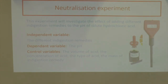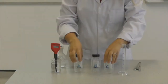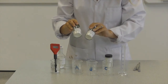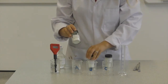Our control variables are everything else we need to keep the same so they don't affect our results: the volume of acid, the concentration of acid, the type of acid, and the mass of indigestion remedy added each time. We've got three beakers ready to test three different indigestion remedies: A, B, and C.